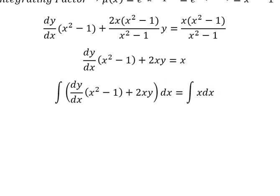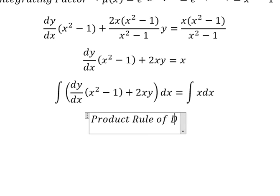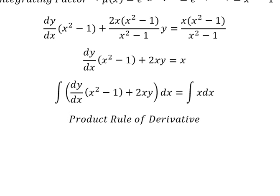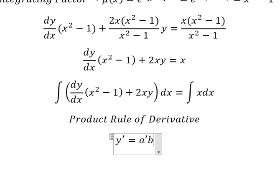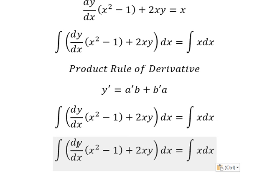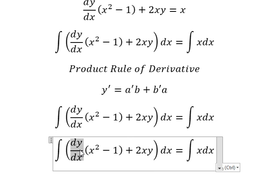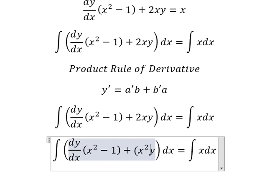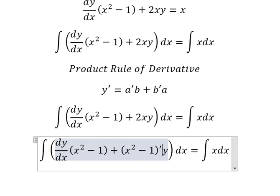Next we can use the product rule of the derivative. So we have the first derivative of y equals the first derivative of a multiplied by b, plus the first derivative of b multiplied by a. So the first derivative of b multiplied by a gives us this expression.